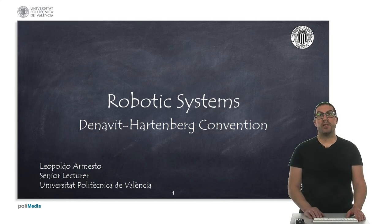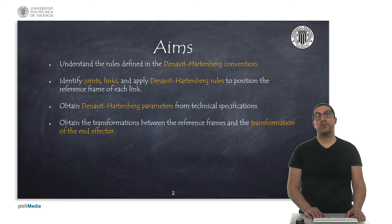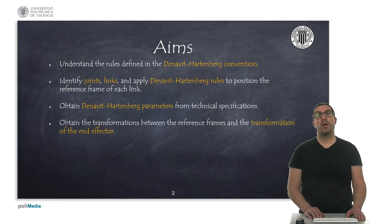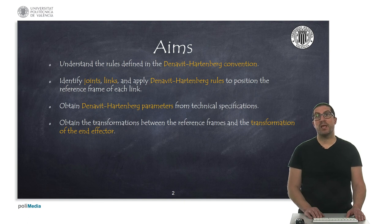In this presentation I will introduce the Denavit-Hartenberg Convention to obtain forward kinematics models of robot arms. The main goal is to explain the rules defined by the convention. We will need to identify robot joints and links so we can apply the Denavit-Hartenberg method rules in order to obtain reference frames associated with each of the links. In addition, we will need to obtain Denavit-Hartenberg parameters from the robot technical specifications, and express a transformation between the links and particularly the end-effector link with respect to the robot base.